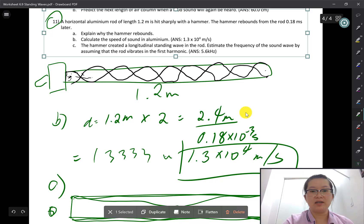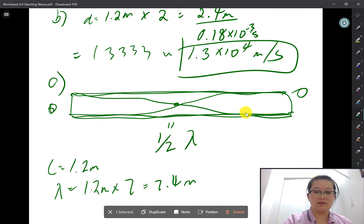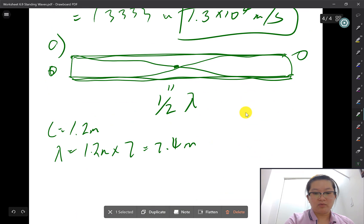We want the frequency. If this is our wavelength, we use the wave equation: velocity equals frequency times lambda. So frequency equals the speed of sound divided by lambda.